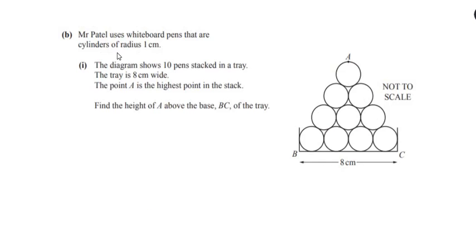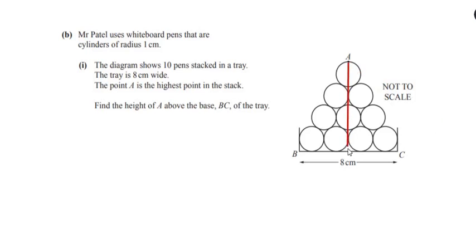Now let us look at part B of this question. Mr. Patel uses whiteboard pens that are cylinders of radius 1 centimeter. The diagram shows 10 pens stacked in a tray. The tray is 8 centimeters wide. Point A is the highest point in the stack. We need to find the height of A above the base BC of the tray.